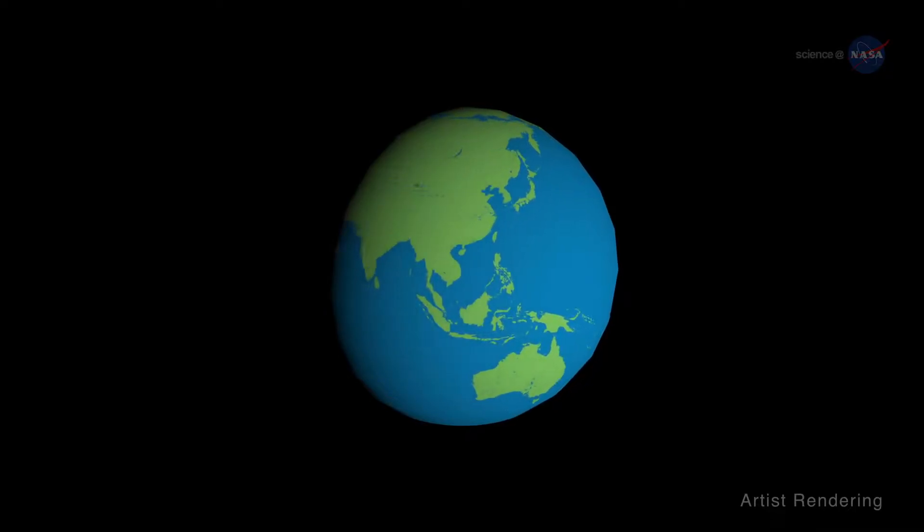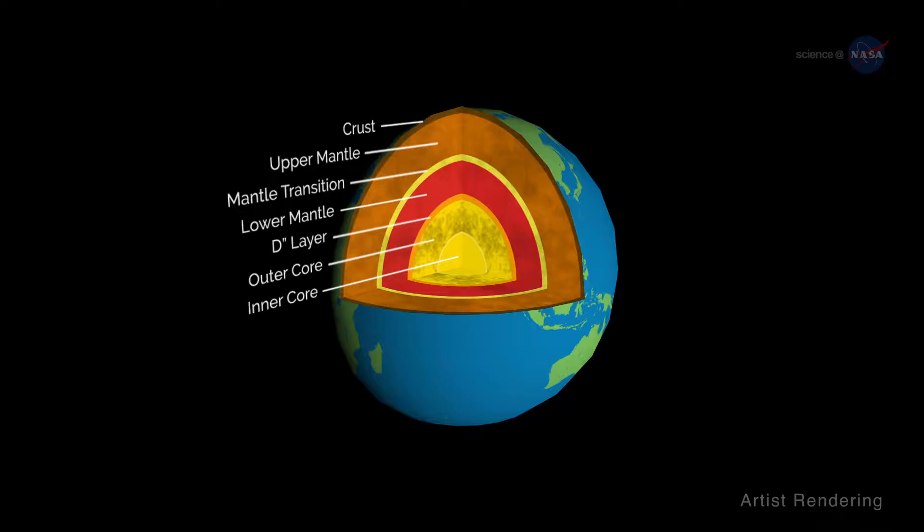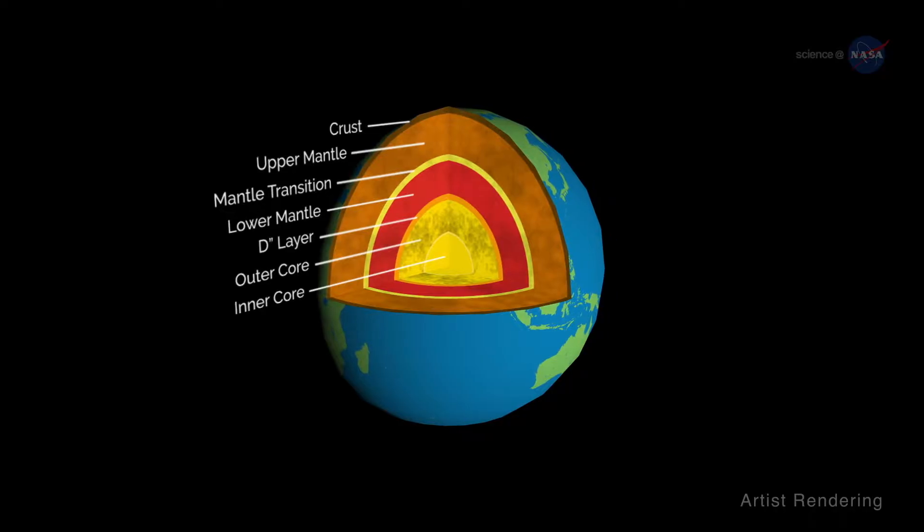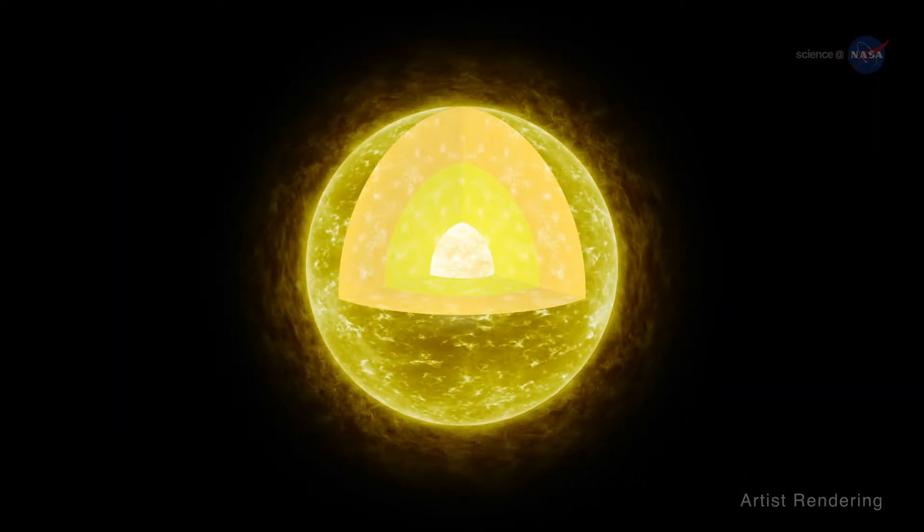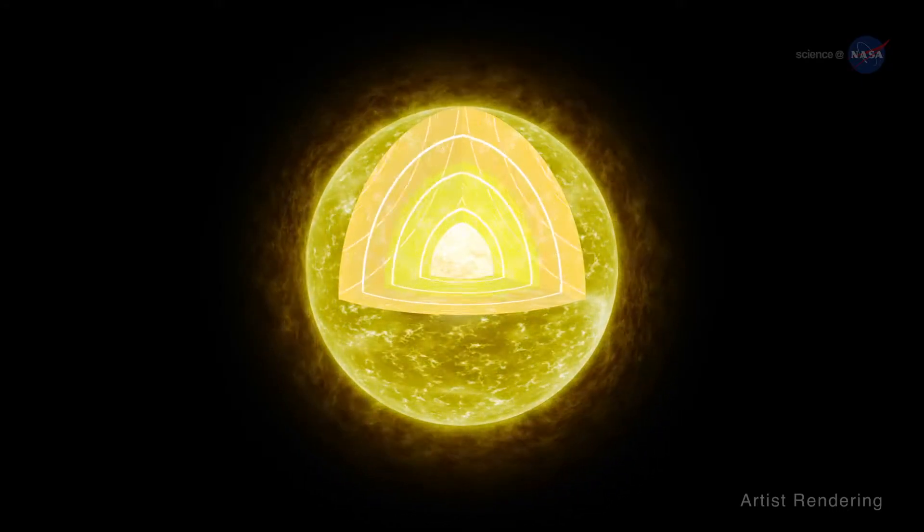Astro-seismology is akin to the science of seismology. Earthquakes send waves rippling through the body of Earth. By analyzing those waves, seismologists can figure out the interior structure of our planet. There are also waves rippling through the interior of stars—acoustic waves.